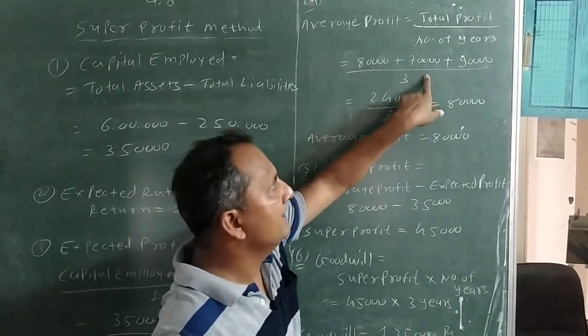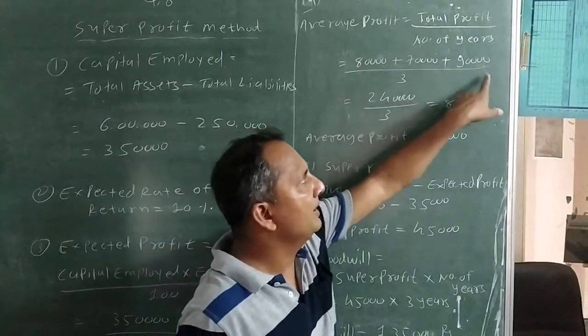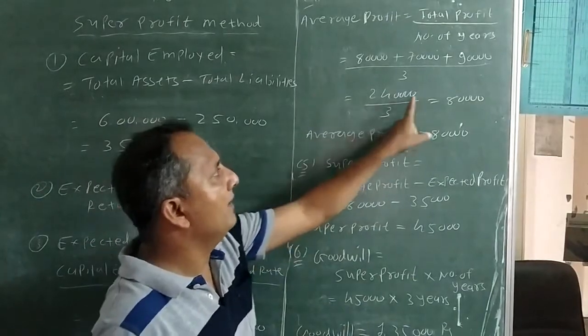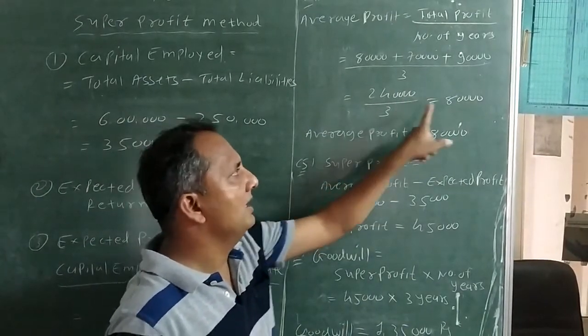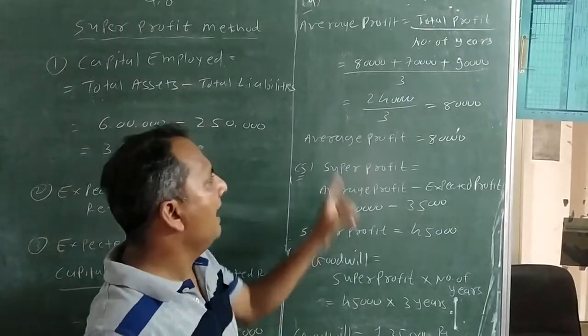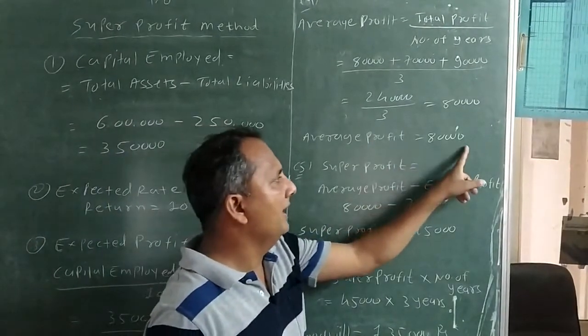Here first year profit is 80,000, second year profit is 70,000, third year profit is 90,000. Total of 3 years profit is 240,000 divided by 3 is equal to 80,000. Now you can get average profit is 80,000.